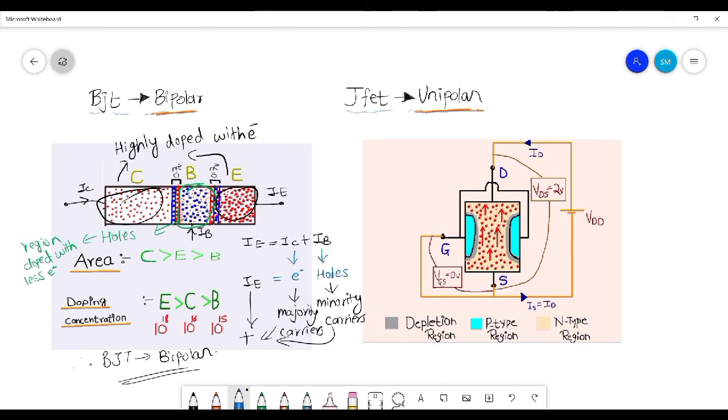While explaining, I told that the output current ID is only because of electrons which are traveling from source to drain. There is no such involvement of the holes which are present in this P region. There is no such involvement of holes in this output current ID. Our output current is only because of electrons which move from source to drain.